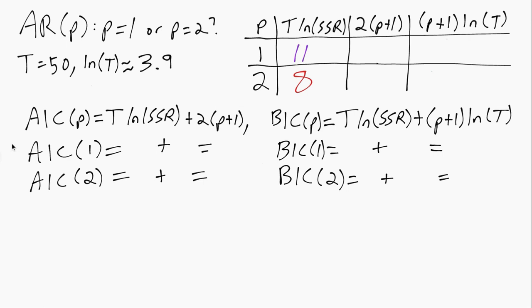So in this particular case we're assuming we have a sample of size 50, and later we'll need to use the natural log of that which is 3.9 approximately.